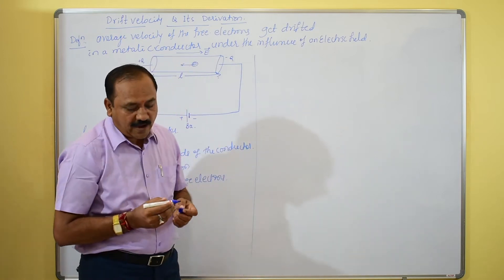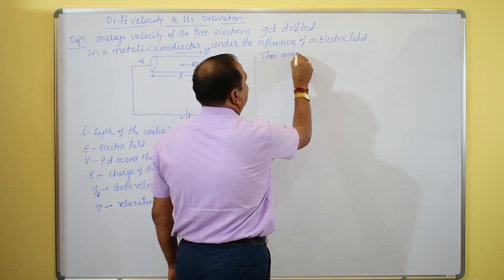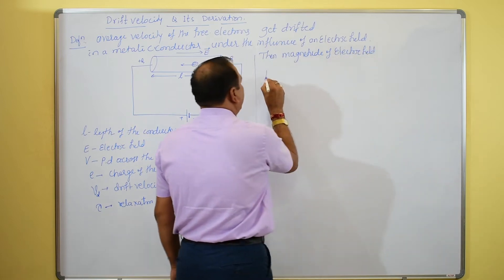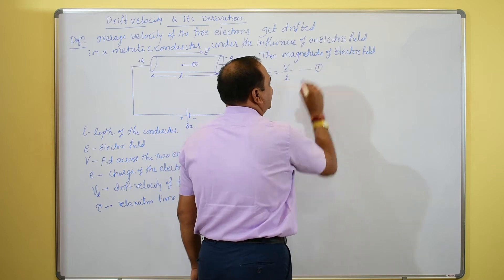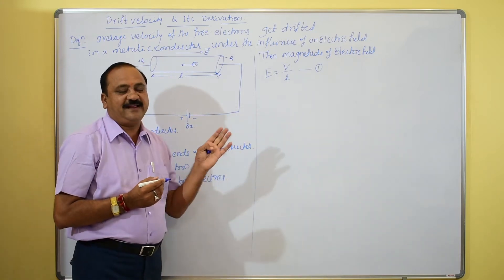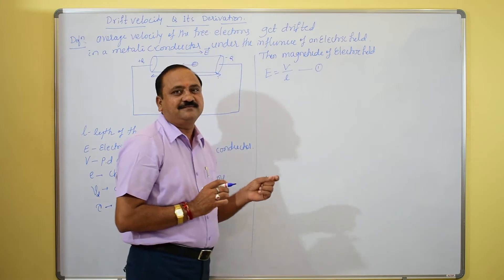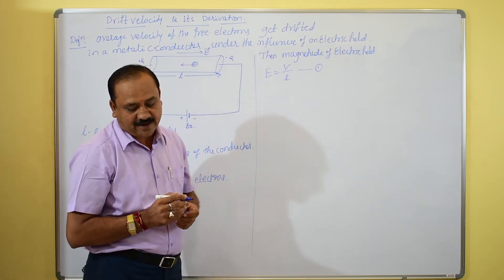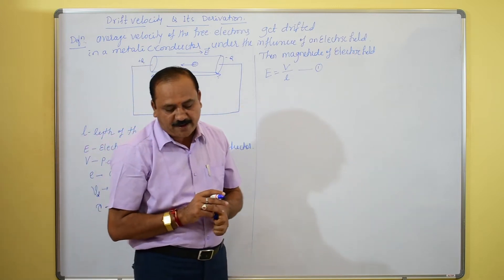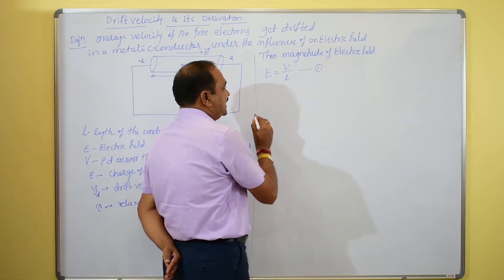The magnitude of the electric field is equal to V divided by L — that is equation number 1. Here E is the electric field, V is the potential difference between the two ends of the conductor, and L is the length of that conductor. Under the influence of this electric field, the free electrons get drifted with their drift velocity. When an electric field is applied, the electron experiences some force.